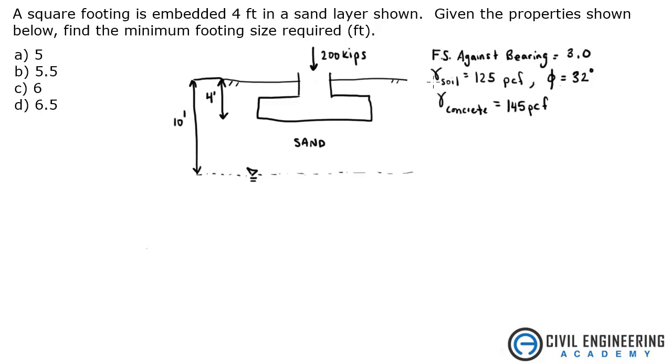We're given a factor of safety against bearing of three. The unit weight of soil is 125 pcf and the internal friction angle is 32 degrees. And then they give you gamma of concrete, unit weight of concrete of 145.